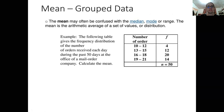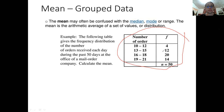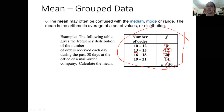Let's have an example. The following table gives the frequency distribution of the number of orders received each day during the past 50 days at the office of a mail order company — calculate the mean. The class intervals are: 10–12 with frequency 4, 13–15 with frequency 12, 16–18 with frequency 20, and 19–21 with frequency 14. In total we have 50 data points, so N equals 50.